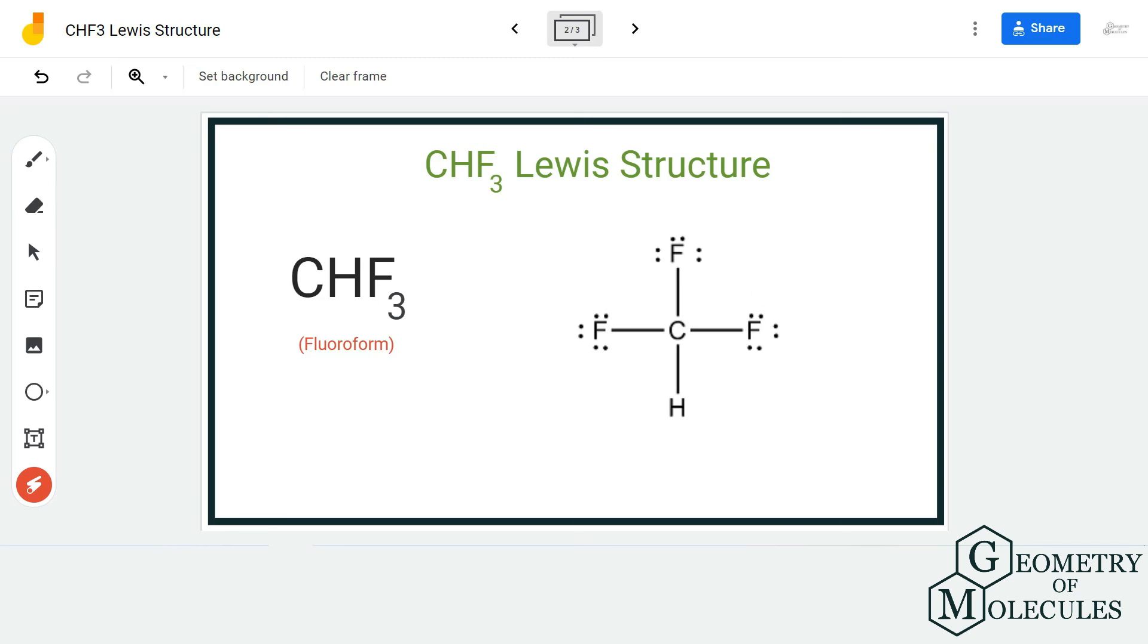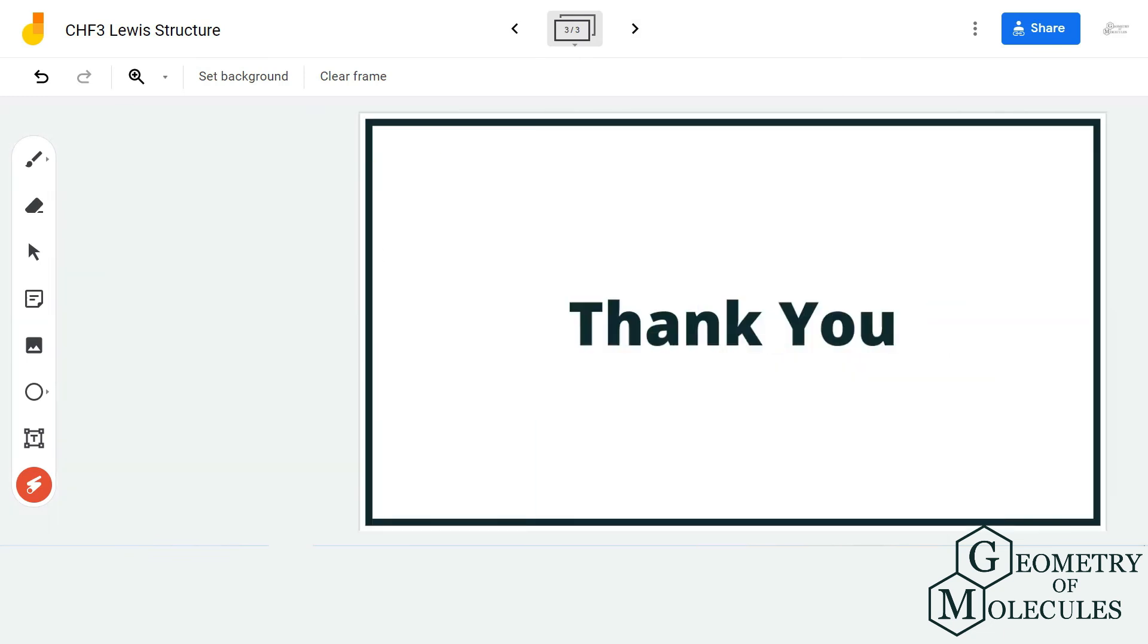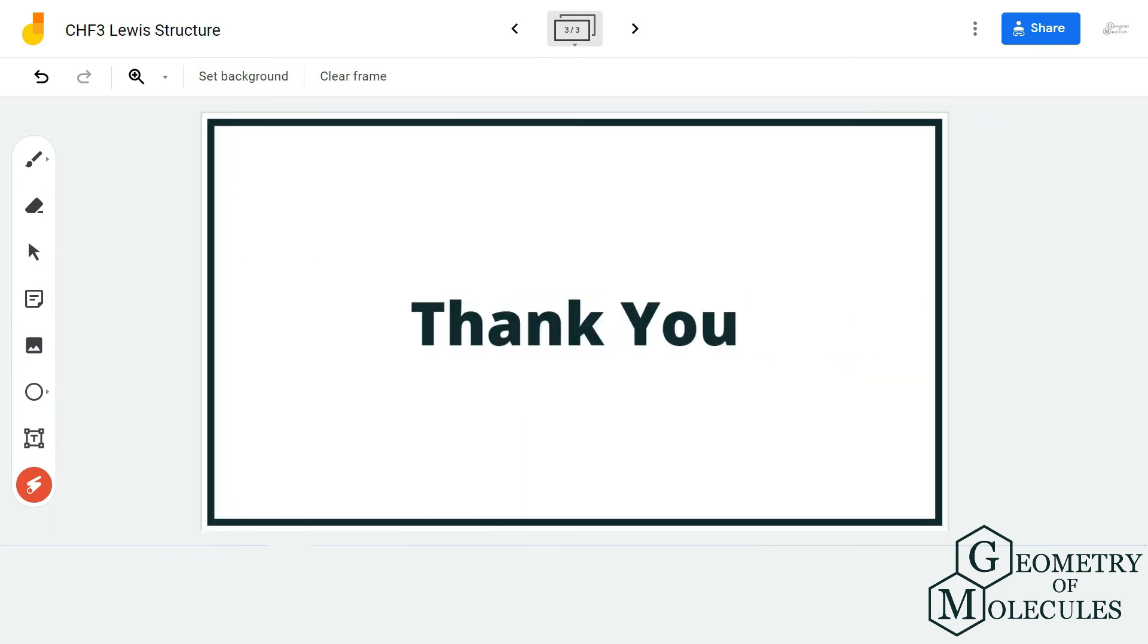Hence this is the Lewis structure of CHF3, in which carbon forms single bonds with hydrogen and three fluorine atoms. I hope this video helps you to understand that. For more videos on Lewis structures, molecular geometry, and polarity of molecules, make sure to subscribe to our channel. Thank you for watching.